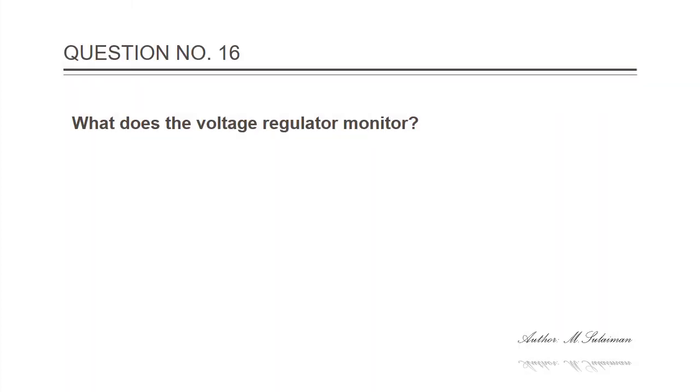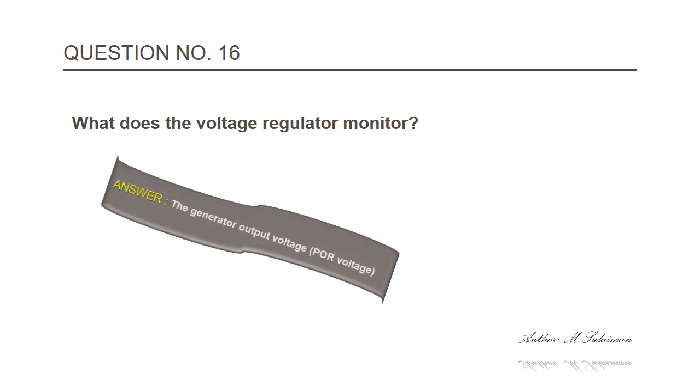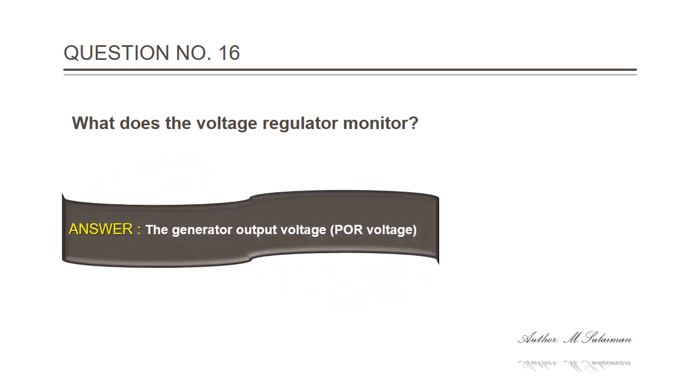Question 16: What does the voltage regulator monitor? Answer: The generator output voltage and POR (point of regulation) voltage.